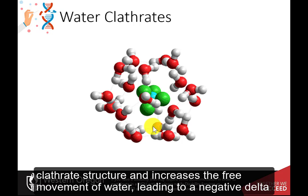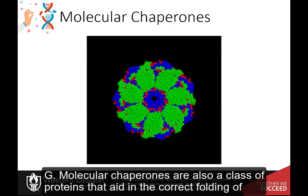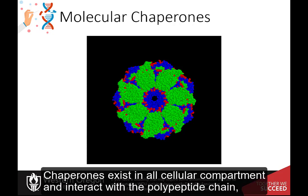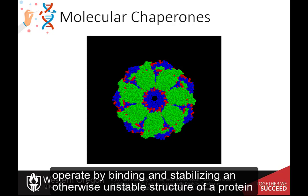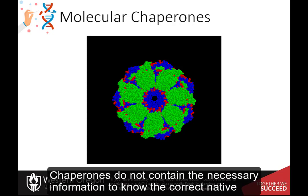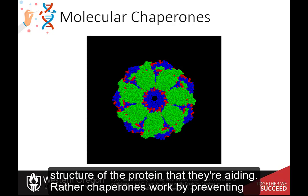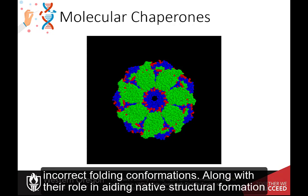Molecular chaperones are also a class of proteins that aid in the correct folding of proteins in vivo. Chaperones exist in all cellular compartments and interact with the polypeptide chain in order to allow the native three-dimensional conformation of the protein to form. They operate by binding and stabilizing an otherwise unstable structure of a protein during its folding pathway. Chaperones do not contain the necessary information to know the correct native structure of the protein that they are aiding. Rather, chaperones work by preventing incorrect folding conformations.